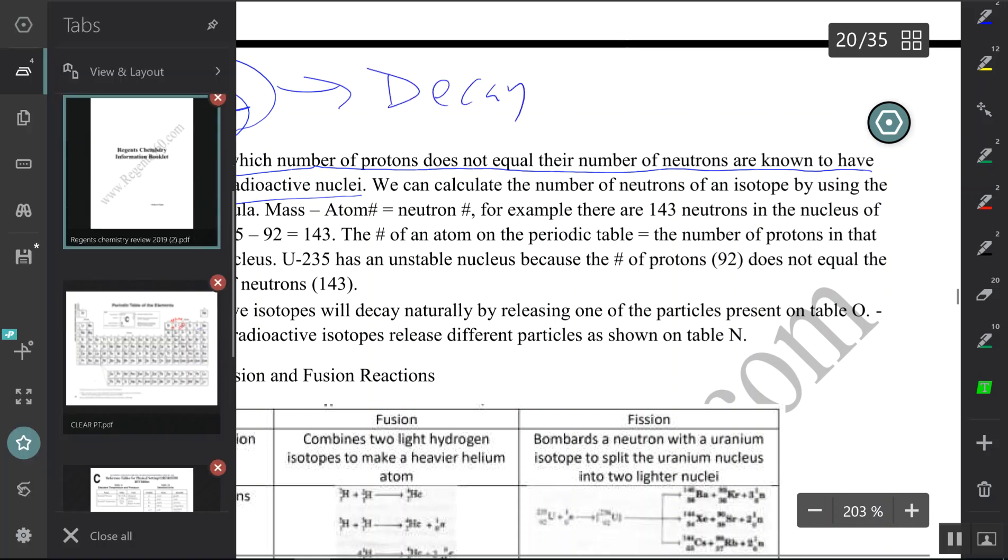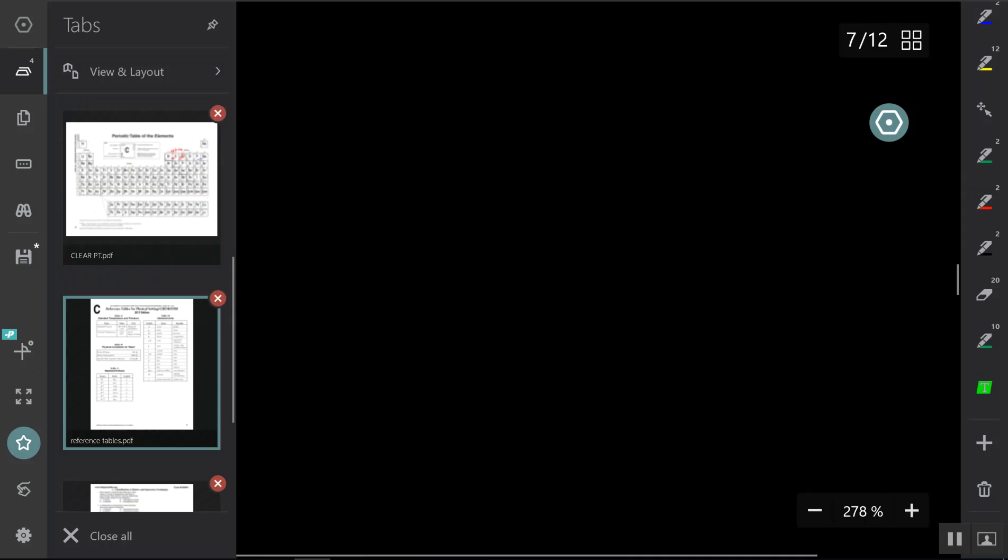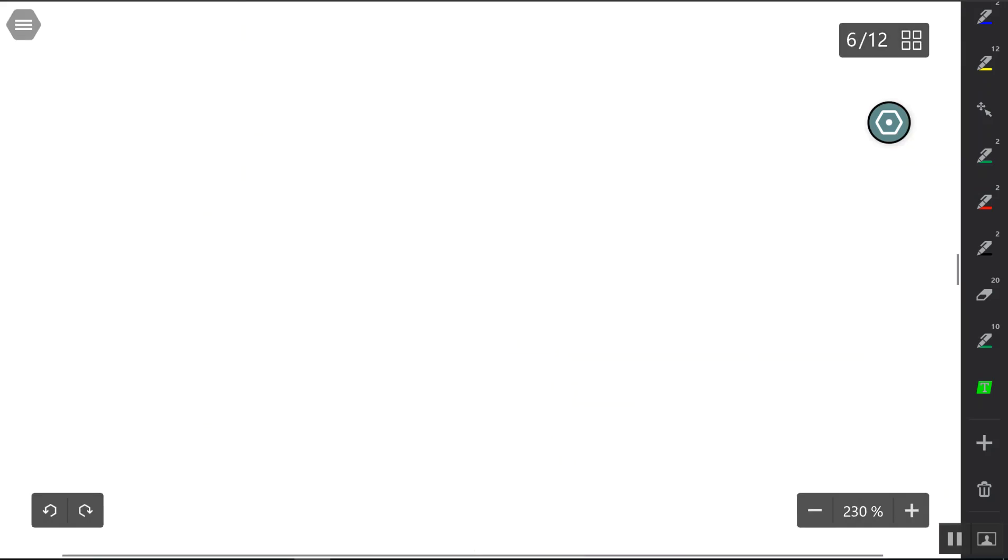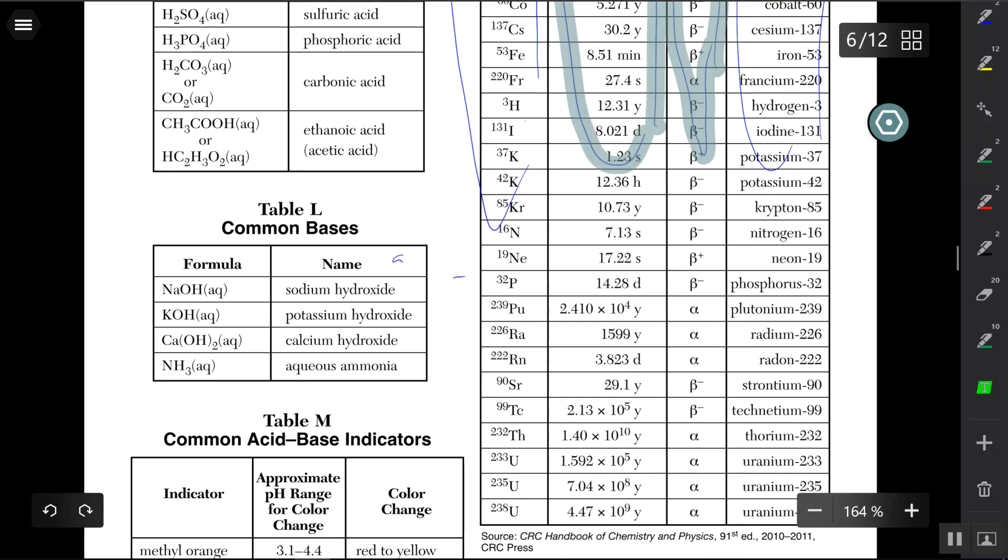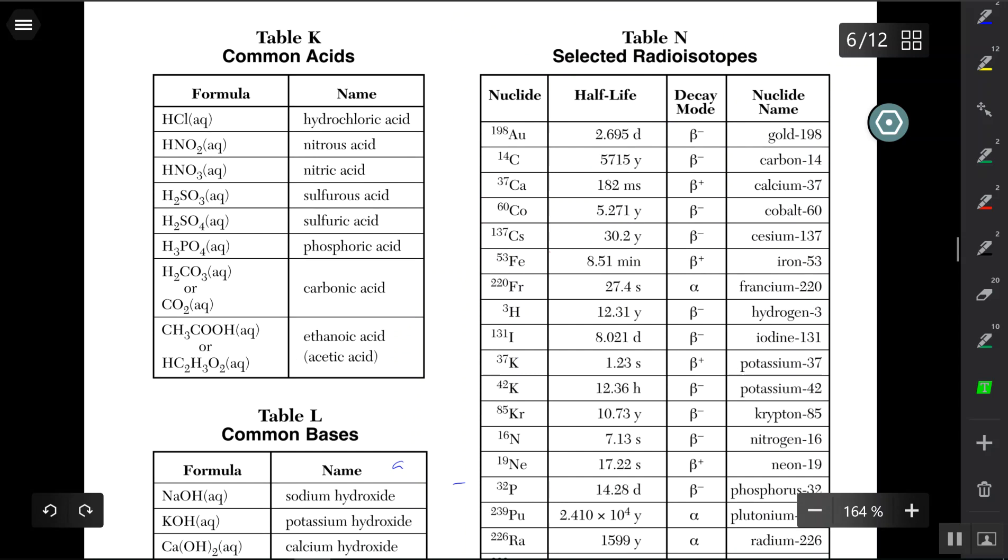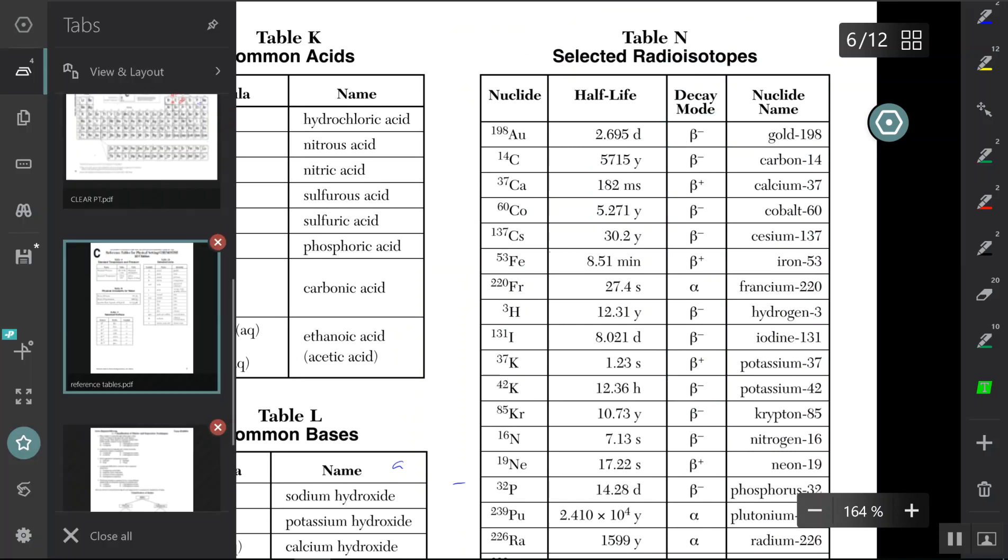We can look at Table N. It's going to produce either alpha, beta, gamma, or positron particles as shown on Table N decay modes. It's going to produce various different particles and continue to produce those particles until it decays into a stable form.